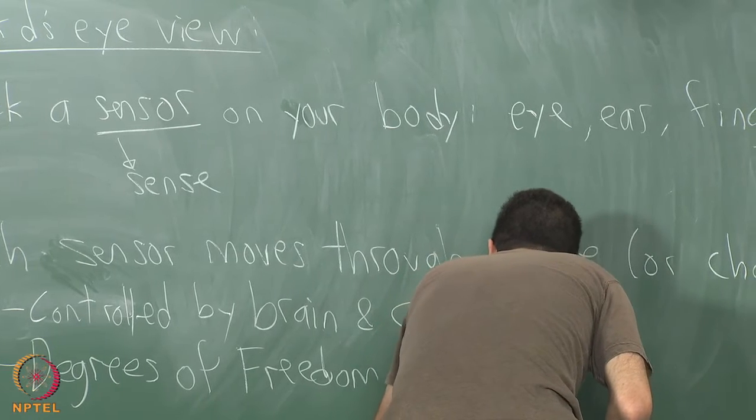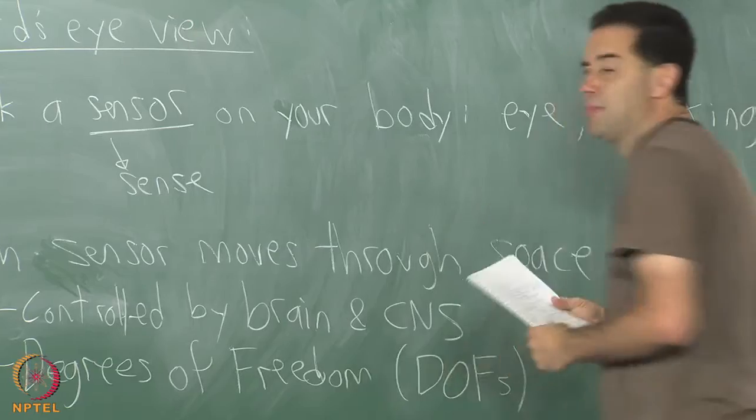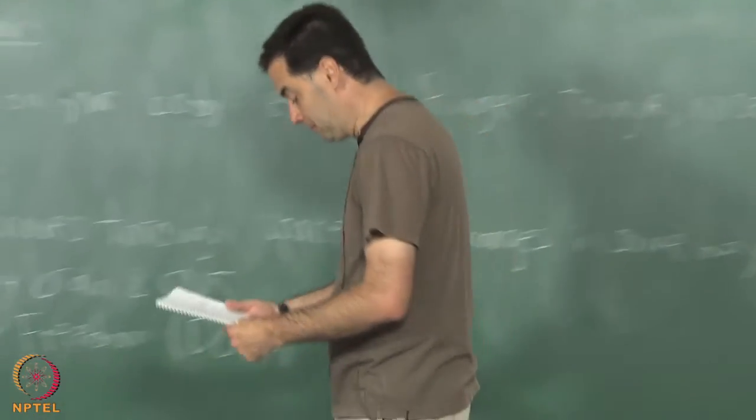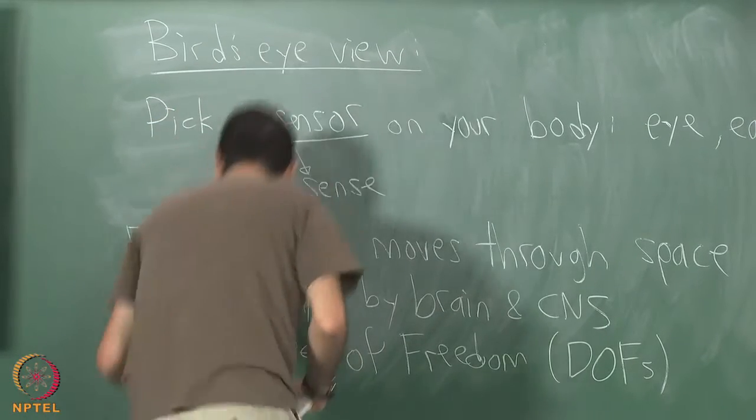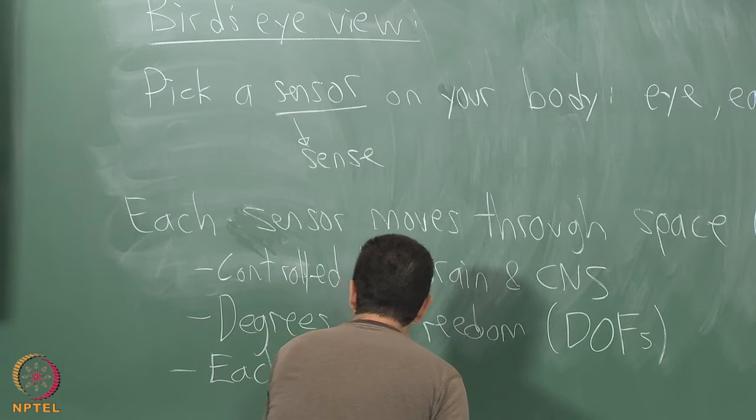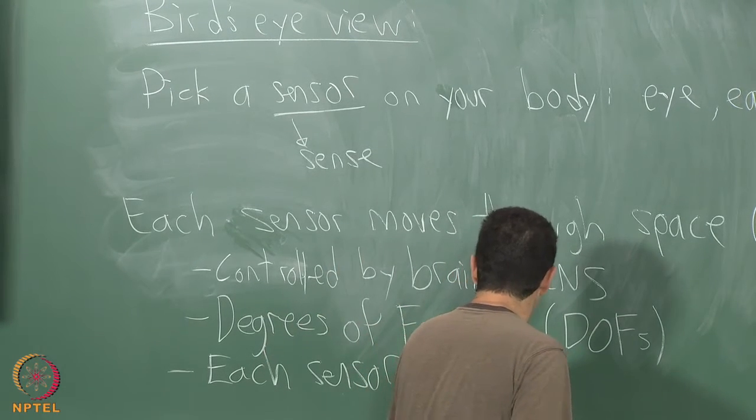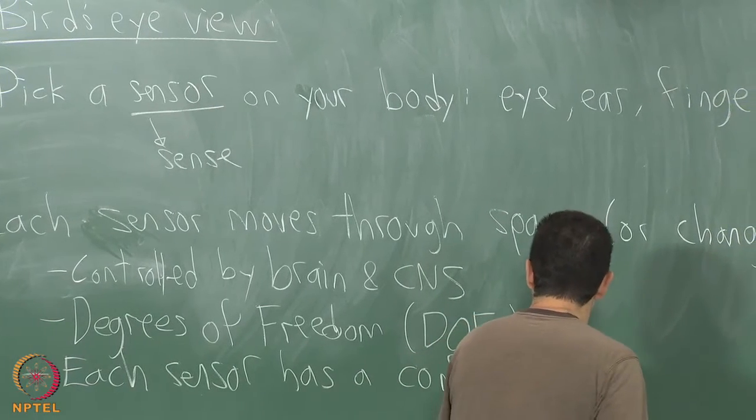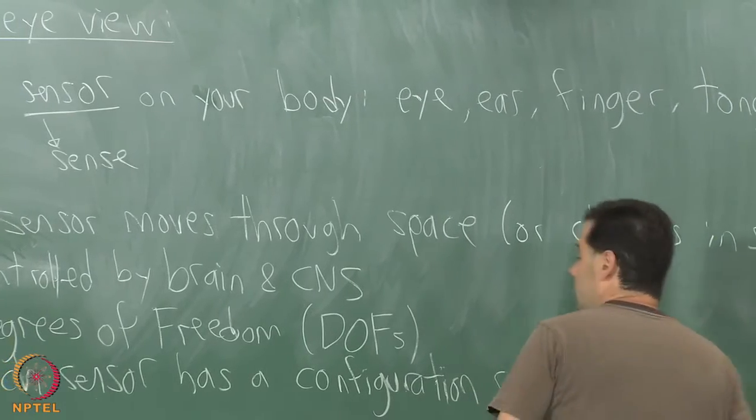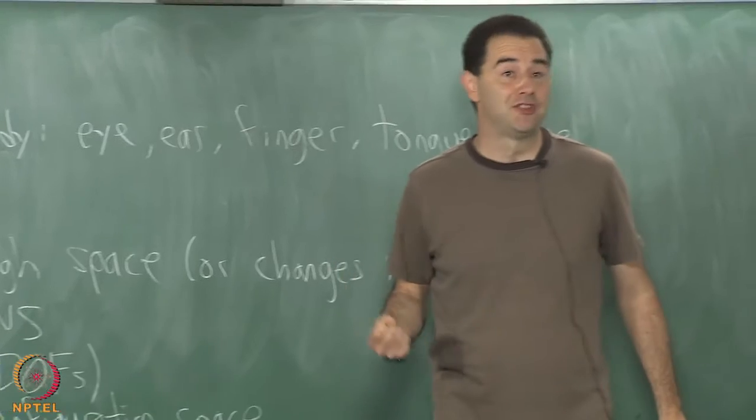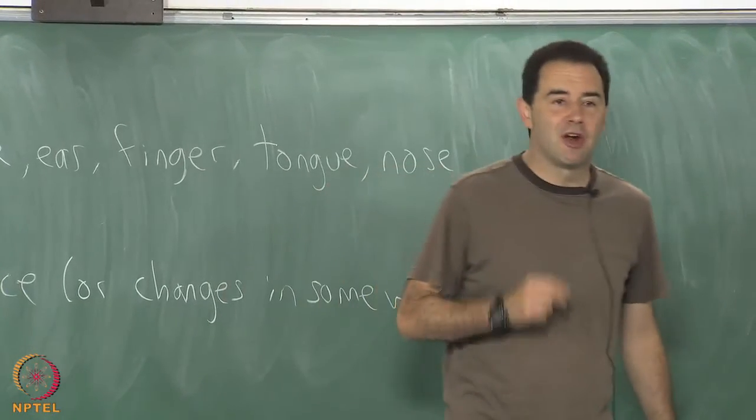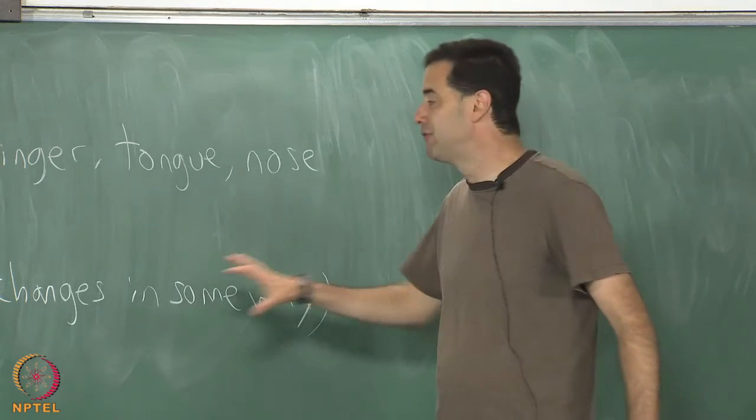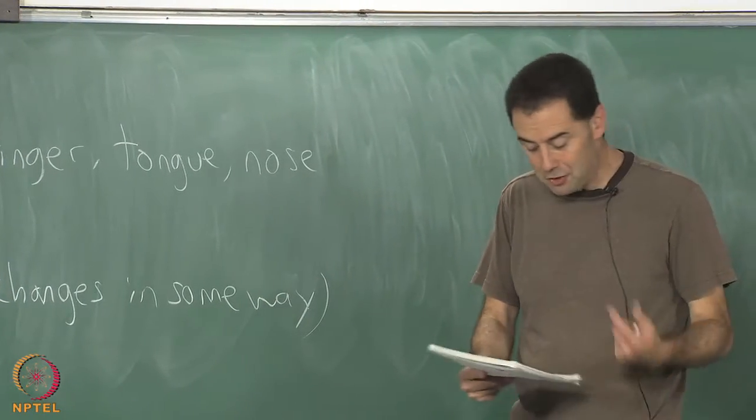How many DOFs does that sensor have, how many degrees of freedom does it have? This is a very important thing. Each sensor has a space of configurations, a configuration space. In other words, the set of all ways to transform or move that sensor or reconfigure that sensor. It's a very important thing to take into account. Our bodies are changing the configurations of our sensors all the time without telling us, without being consciously aware of that. So this is something we have to train ourselves to pay a lot of attention to.